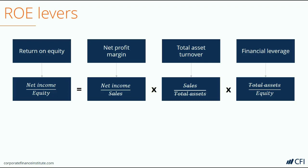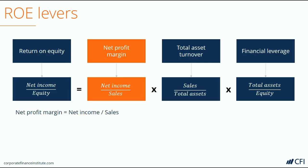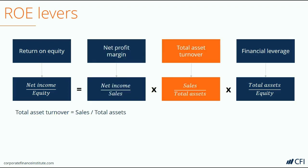Profitability is probably the most obvious lever that anyone would look to. By improving profitability, a company will improve its rate of return for shareholders. Efficiency is another important lever — how well are assets being used to generate sales? If a company has low margins, it may focus on being more efficient with its assets to generate more sales and in turn improve return on equity.